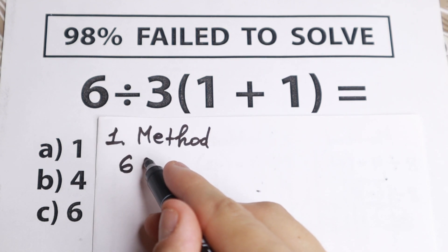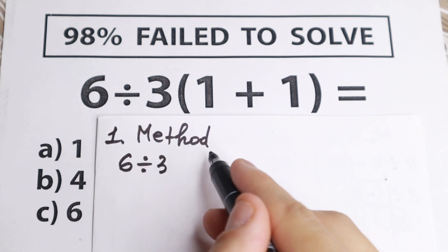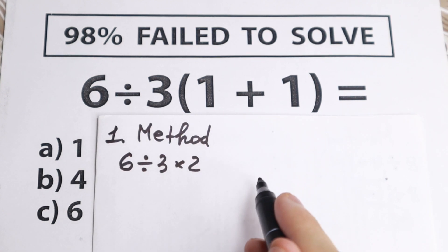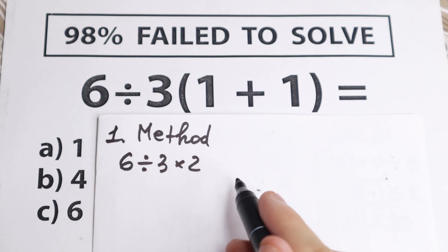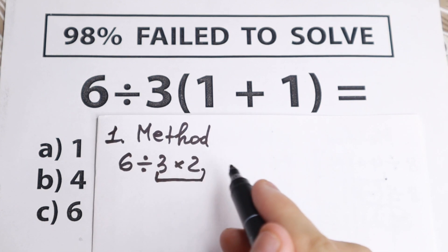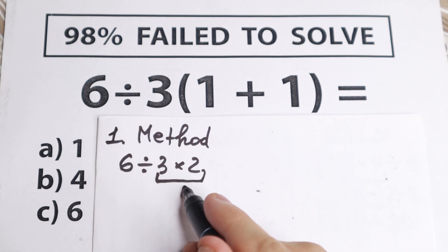So we have 6 dividing by 3, and we need to multiply it by 2, because 1 plus 1 equal to 2. And as you can see we have this situation, and a lot of students do this mistake that they continue with multiplication right here, because if we multiply 3 times 2 we will have 6.